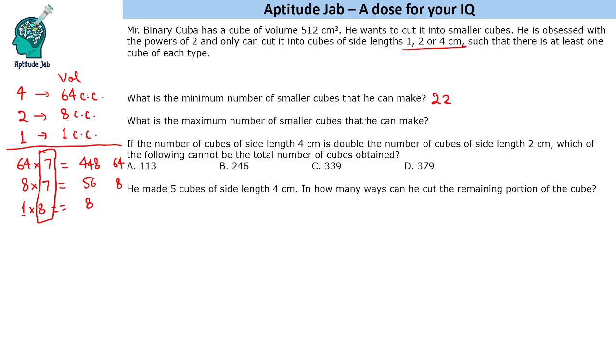If you have to find the maximum number of cubes, we will have 1 cube of these types. 64 into 1 and 8 into 1. This will occupy a volume of 64, this will occupy a volume of 8. The remaining volume is 440.